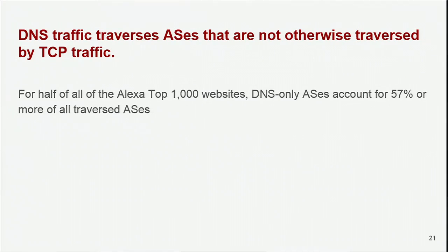Getting back to TOR, this means that an exit relay set up to do its own resolution exposes revealing DNS traffic to ASs that do not have the opportunity to observe the corresponding TCP traffic. We conclude from this experiment that DNS traffic is exposed to parts of the internet that subsequent web traffic is not, and that means there is a class of adversary that has been ignored thus far.